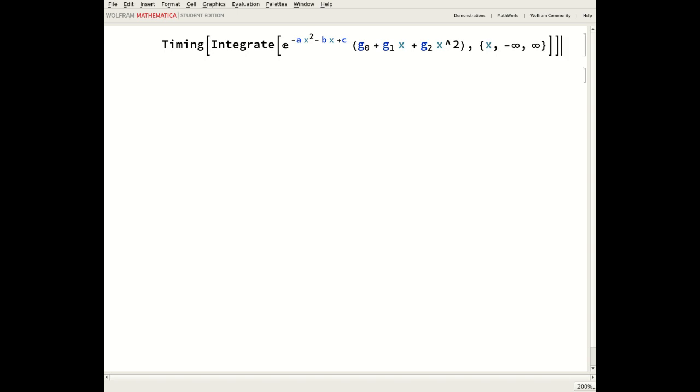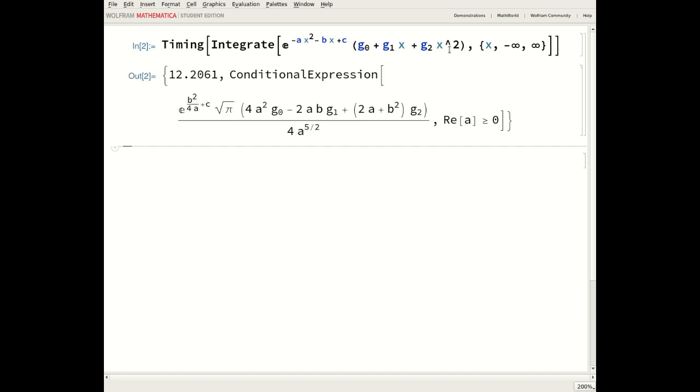A simple example here is a Gaussian integral. So here I have an exponential of a second order polynomial in x times a polynomial in x. And if I plug this in and I ask Mathematica to evaluate it, it will take a little while. It actually has to go through a few transformations, do a few checks and balances, and eventually after quite a long time, 12 seconds, I get my result, which is a conditional expression because the real part of A has to be positive.